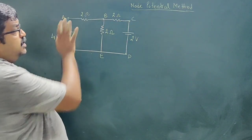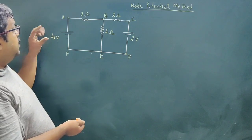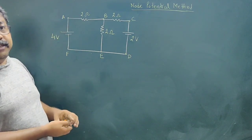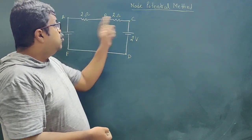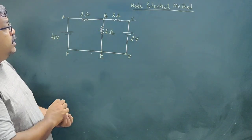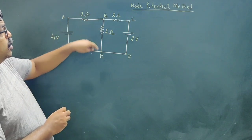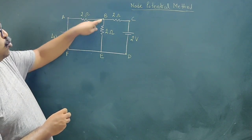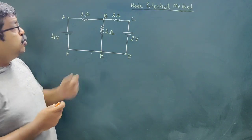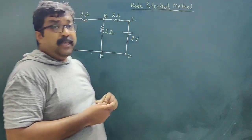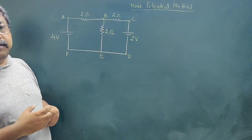Now suppose this is a circuit given. 4 volt is the potential of this battery, this is 2 volt, this is 2 ohm, this is 2 ohm, and this is 2 ohm. It is asked: what is the current flowing through this part — this 2 ohm resistance, how much current is flowing? So now we are going to use the node potential method and learn how to apply it.